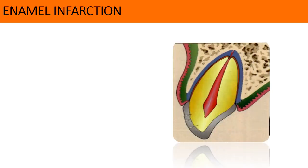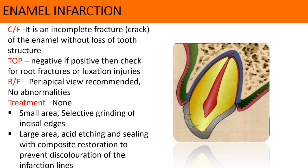First is enamel infraction. It involves cracks in the enamel without loss of the tooth structure. Tenderness on percussion is mostly negative. In case it is positive, then you have to check for root fractures or luxation injuries. The recommended radiographic view is periapical and mostly no abnormalities are seen. However, in case there are symptoms like tooth impaction, loosening of the tooth, or the patient is feeling numbness in that area, then you have to go in for other radiographic views and angulations. Treatment: as shown in the photograph, no treatment is required. In case there is a small area along the incisal edges, we can go in for selective grinding. For a larger area, acid etching and sealing with composite restoration is required to prevent the discoloration of the infraction lines.